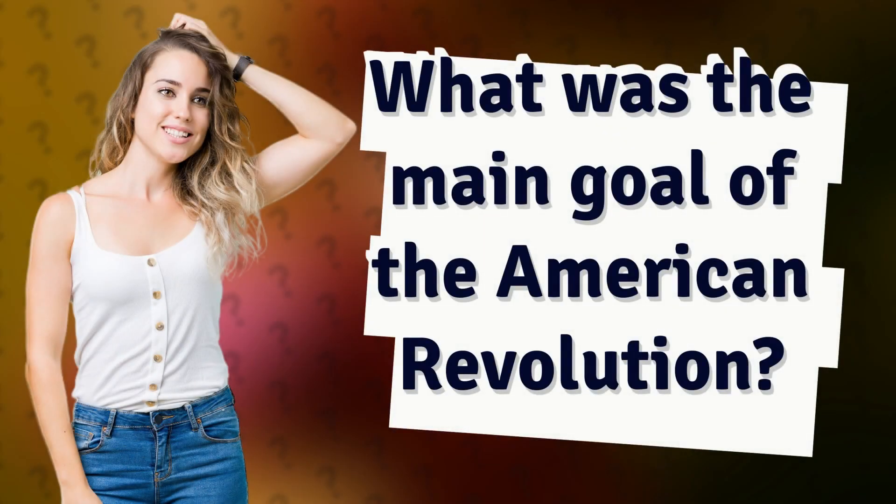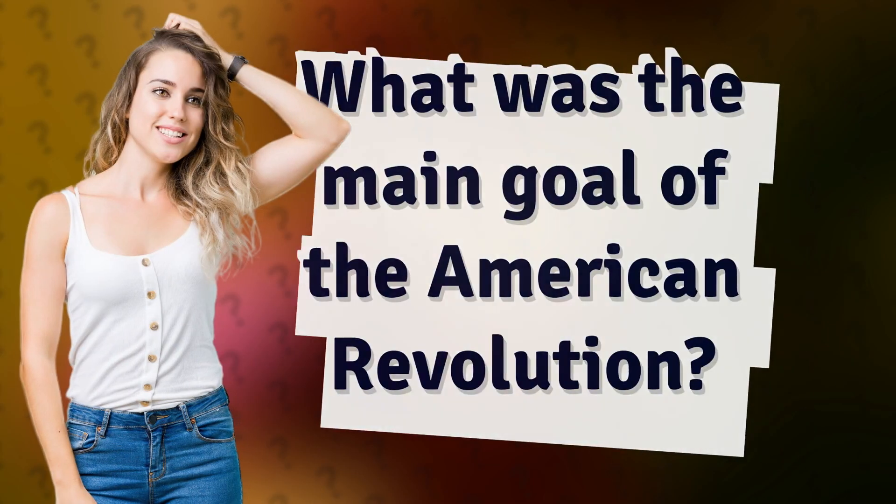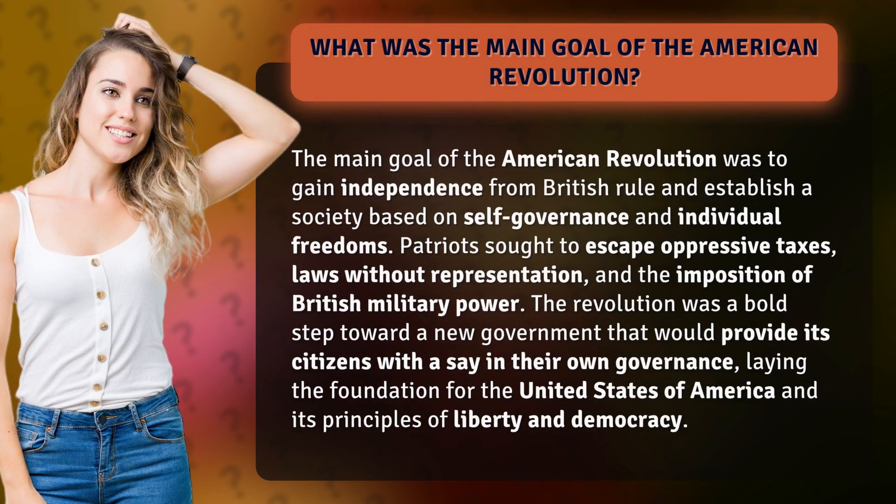What was the main goal of the American Revolution? The main goal of the American Revolution was to gain independence from British rule and establish a society based on self-governance and individual freedoms. Patriots sought to escape oppressive taxes, laws without representation, and the imposition of British military power.